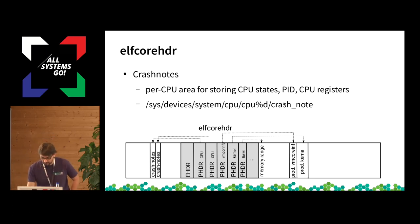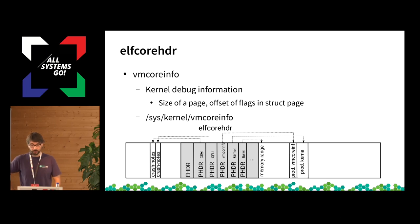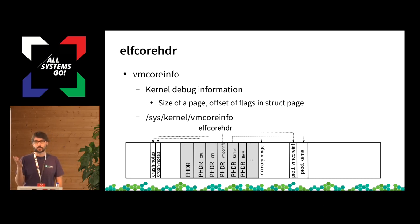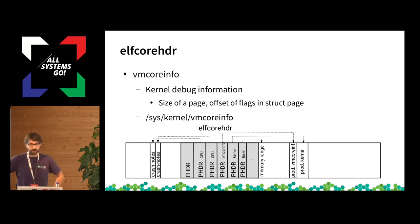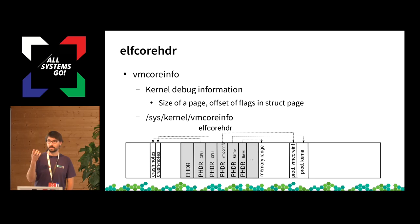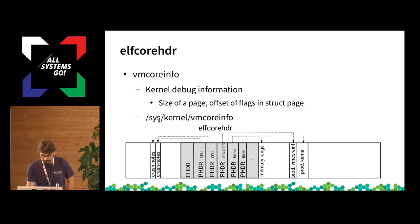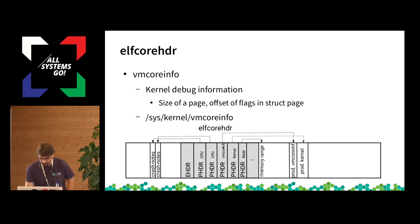From user space you can read a sysfs file for every CPU to find where this crash notes memory is. kexec-tools writes that address into the program header. There's also another important data structure called vmcoreinfo, which holds all information about the kernel's data structures — for example, page size, offset of flags in structs, etc. — needed to understand the dump file. This can also be read by kexec-tools through a sysfs entry, and its address and size get copied into the ELF header.